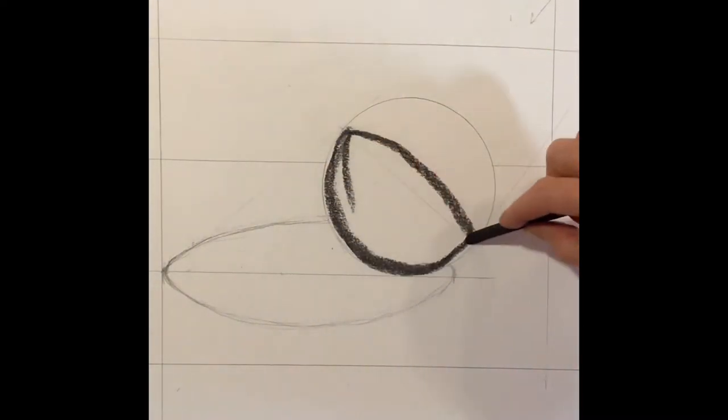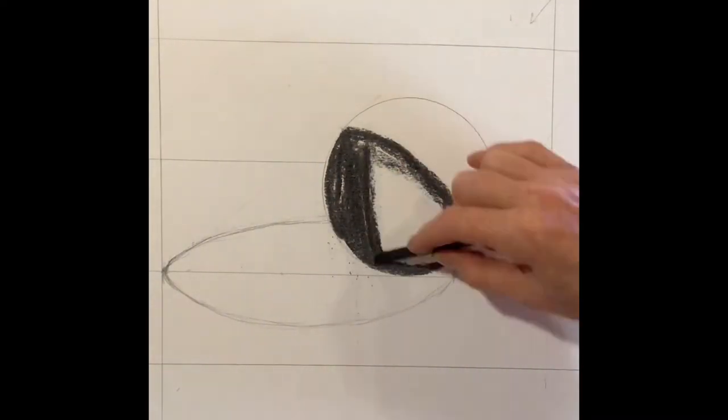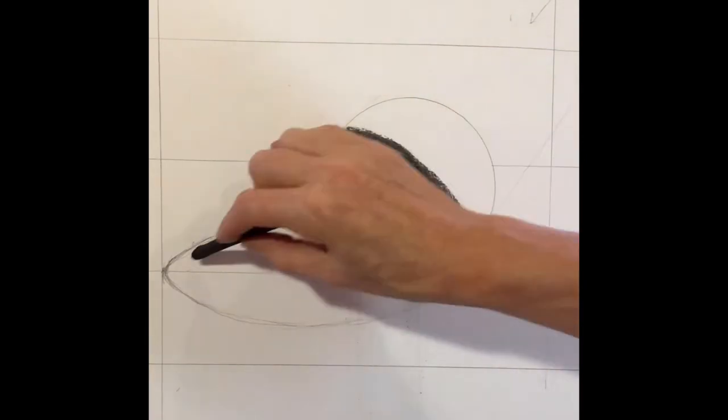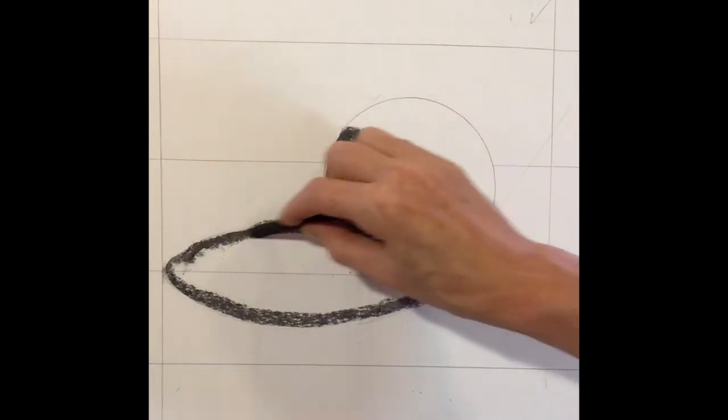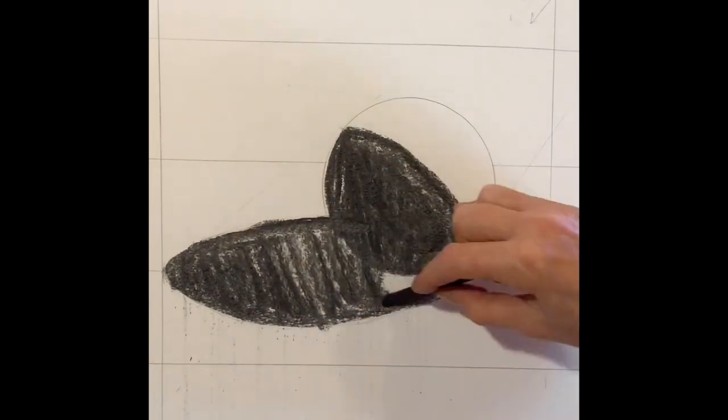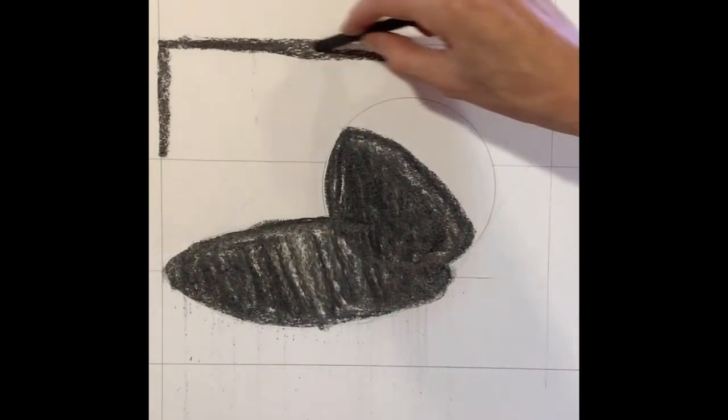Now we're going to do the light shadow pattern in charcoal. I've laid out my sphere and my shadow slightly different from the last time, a little more angled on the light so that it's not hitting the ball quite the same way.